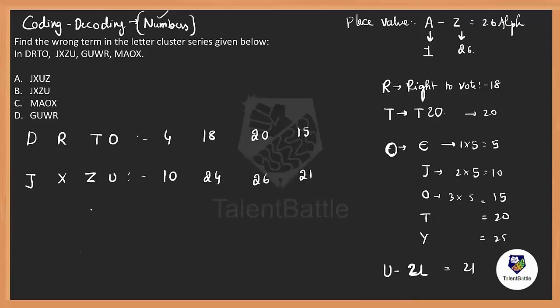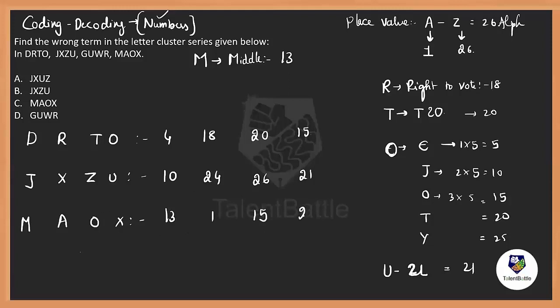For M-A-O-X: M stands for 'middle' — the middle of 26 is 13, so M is 13. A is 1. O is 15 from E-JYOTI. X is 24. For the next cluster Z-U-W-R-G: G has a 7 inside it, so G is 7. U is 21. W looks like three at the end — W is 23 since there are only 26 letters. R is 18 from 'right to vote.'